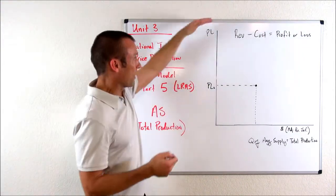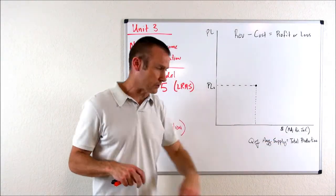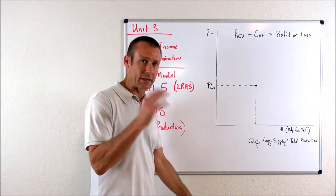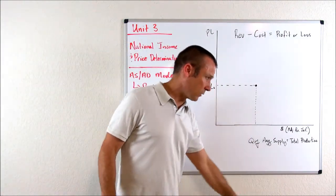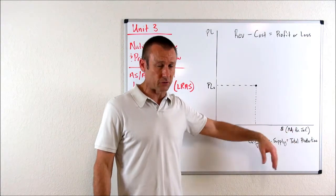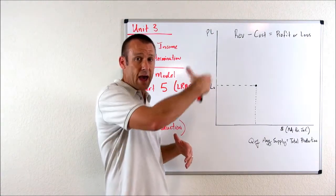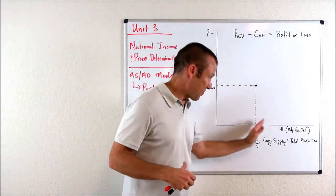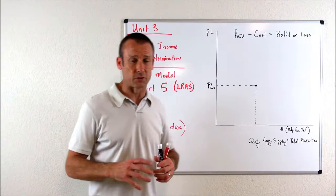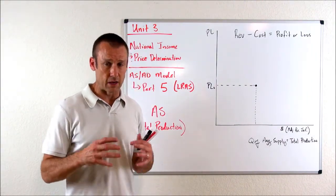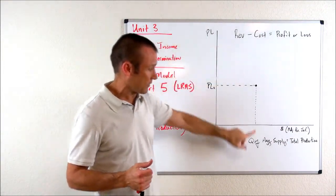Let's go over to our model right here. Price level is the vertical axis. Over here on the horizontal, we've got the quantity of aggregate supply and total production. Way in the future, as we put the AS and AD curves together on the same graph, we're just going to wipe all this away and put real GDP. For understanding's sake, it's good to understand that the horizontal axis represents the quantity of aggregate supply, which is total production. We're focusing on the shapes of the curves. The shape of the curve is really a question about the relationship between the price level and the quantity of aggregate supply.